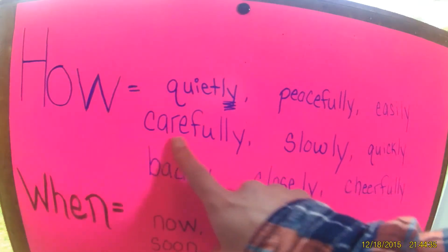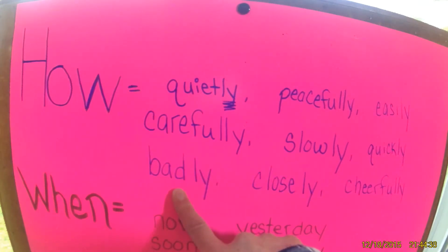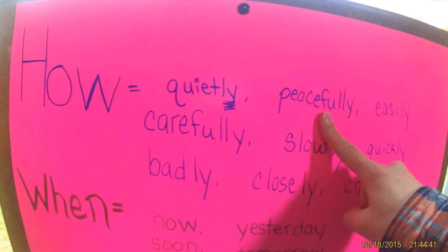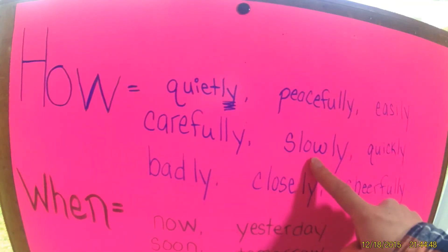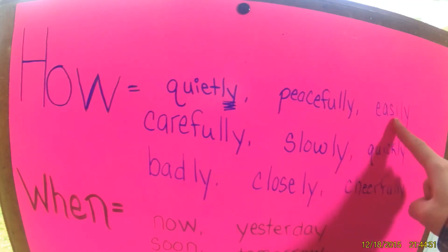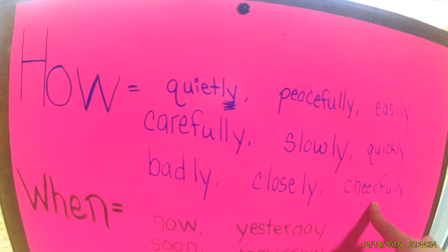Let's try another one. They are talking quietly. Can you find the action word in this sentence? Right, it's talking. Let's look at a couple more: quietly, carefully, badly, peacefully. Let's see if we can use peacefully in a sentence. She was peacefully sleeping. Good job! Slowly, closely, easily, quickly, and cheerfully. These are just a few examples of adverbs describing how something happens.